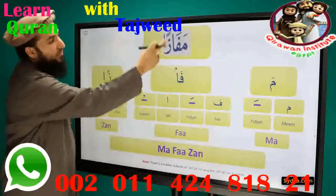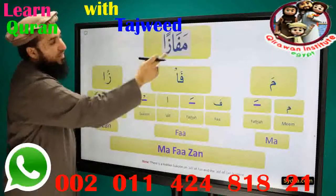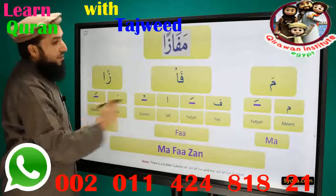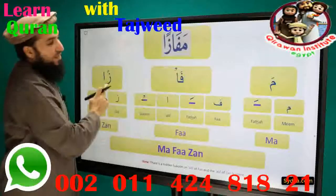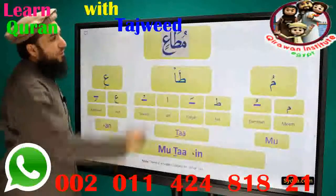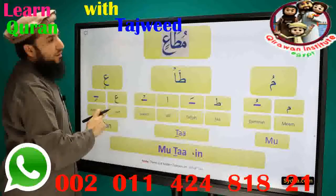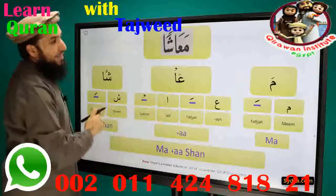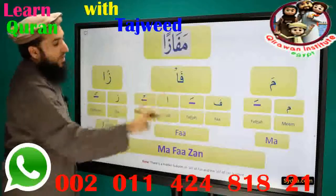The next syllable we have is Za-Fath-A-Tain-Zan. Za is a light letter. It has Fath-A-Tain on top of it. It is followed by Alif and this Alif is silent. Za-Fath-A-Tain-Zan. Combining all three syllables we have Mafazan. The next few slides will be sounds only. Mafazan.